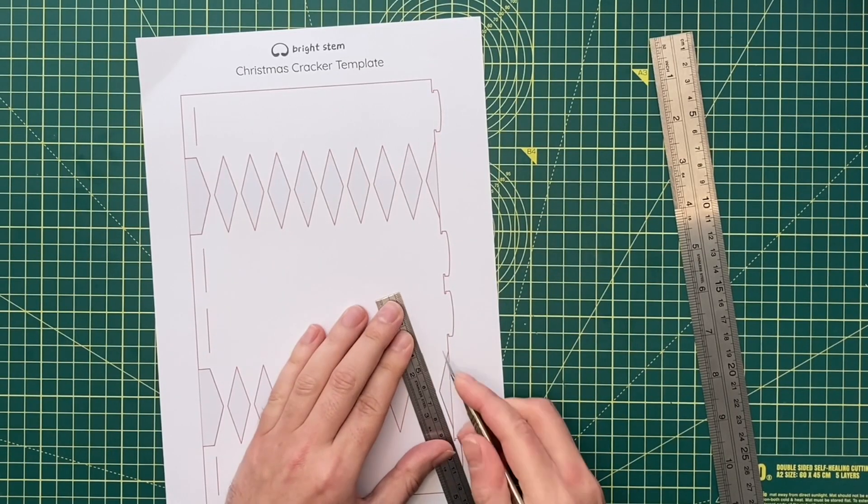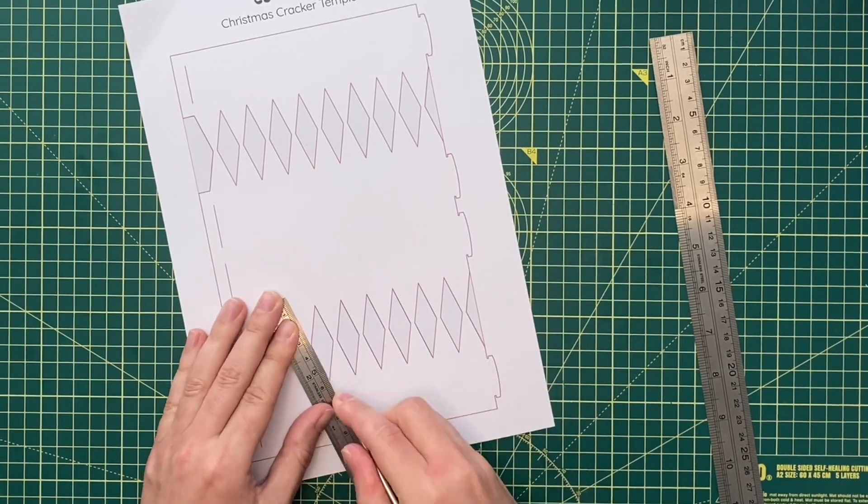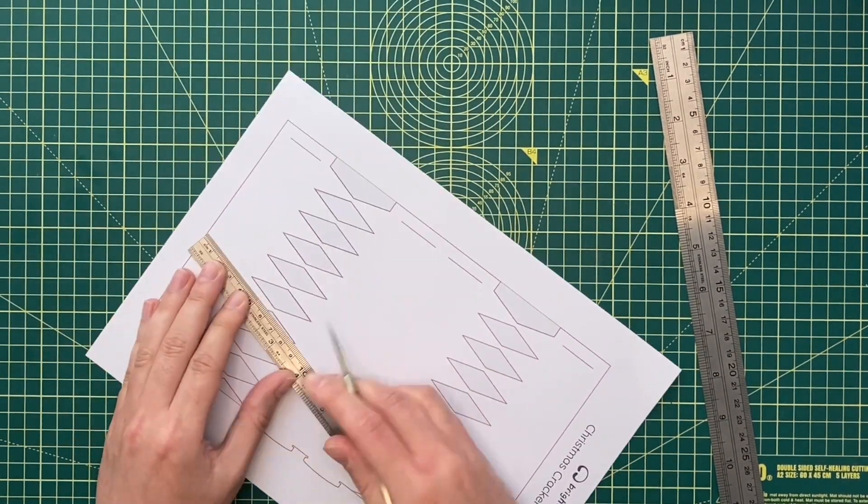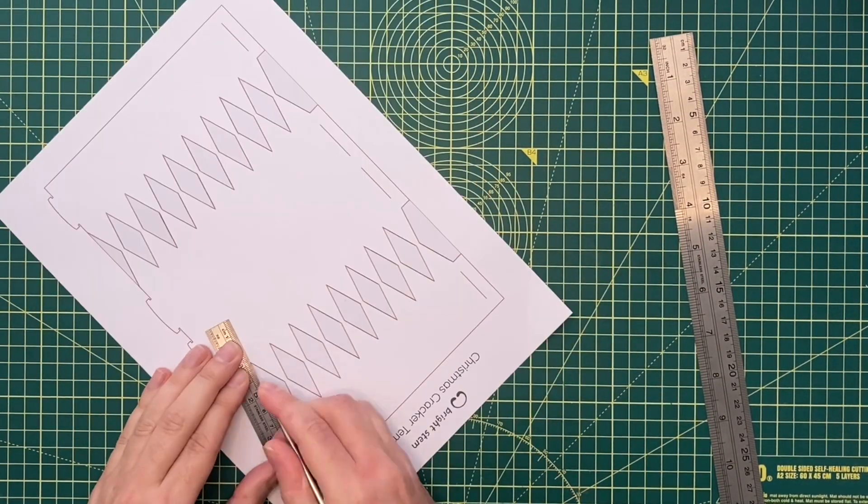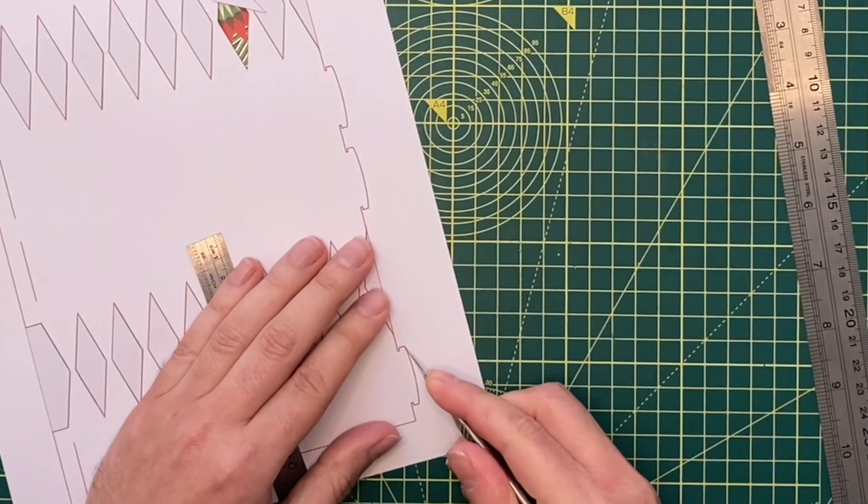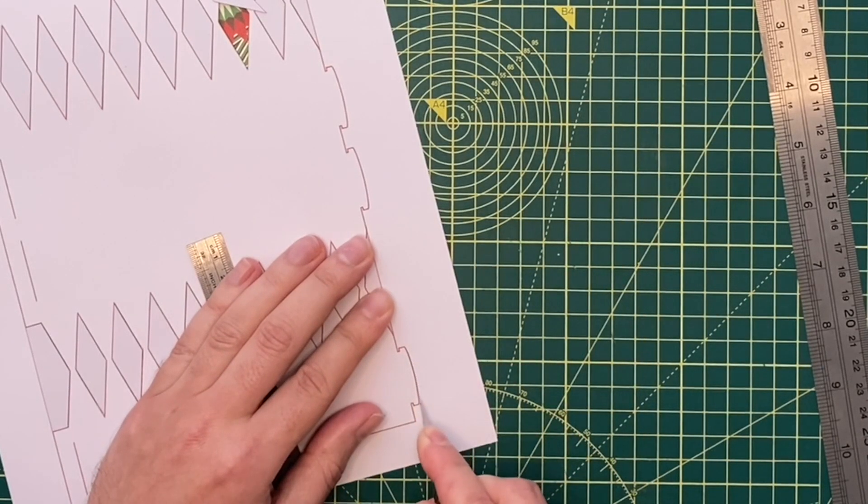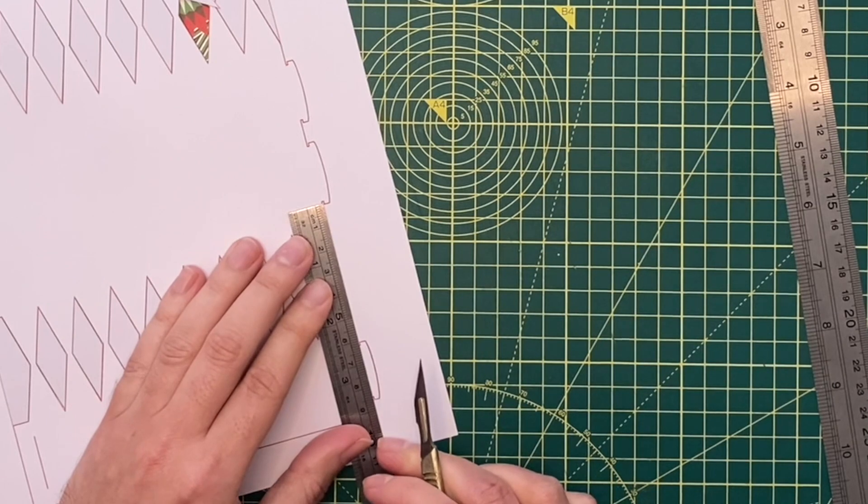Using a scalpel blade, cut out all the red lines on the template. I'd start with the diamond shapes in the middle and then move on to the nodes. You might need to do the curves by hand.